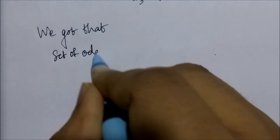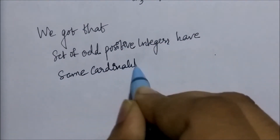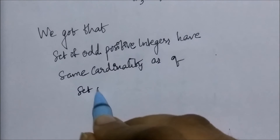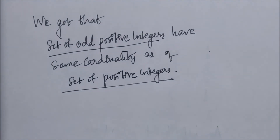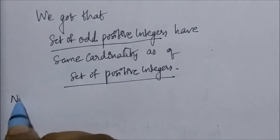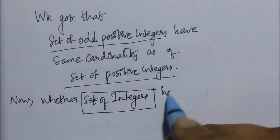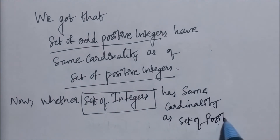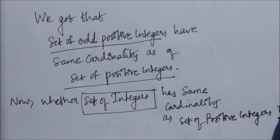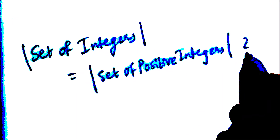We have shown that the set of odd positive integers and the set of positive integers have the same cardinality. Now another question: do the set of integers and the set of positive integers have the same cardinality? Think about it — we will meet in the next lecture to discuss that.